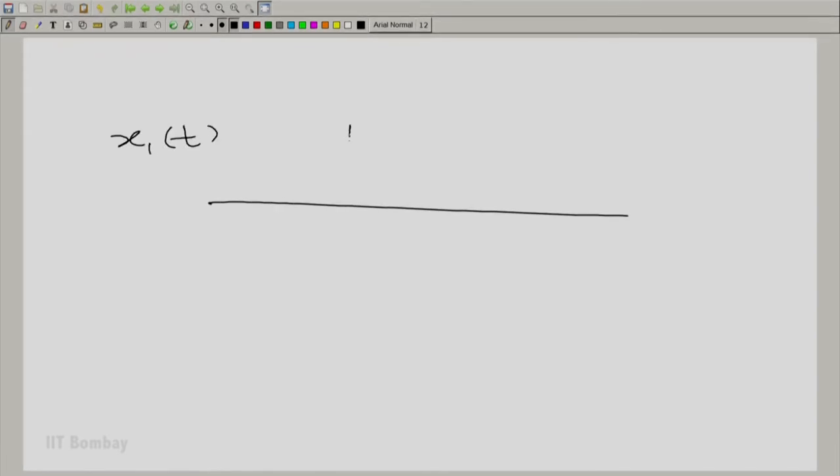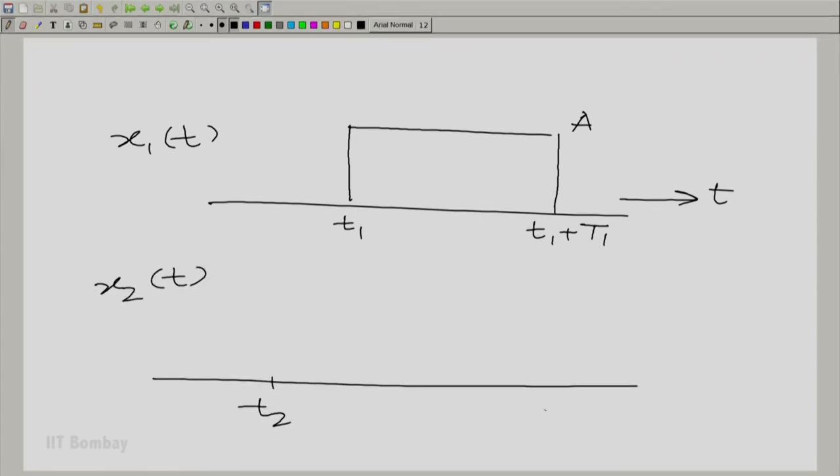Now, we will take the example of two rectangular pulses. x_1(t) is a rectangular pulse going from t_1 to t_1 plus T_1 on the axis of t, with a height of A. Let x_2(t) be the rectangular pulse beginning at t_2 and going up to t_2 plus T_2 with a height of B. Without loss of generality, let t_2 be greater than t_1.